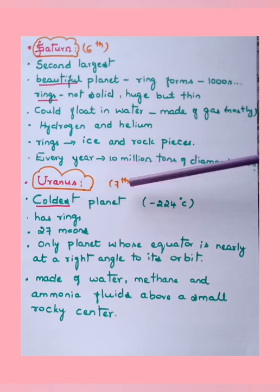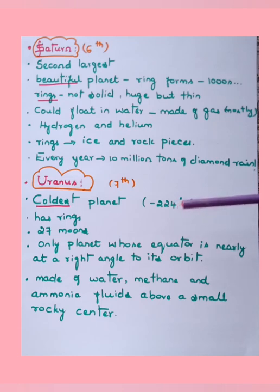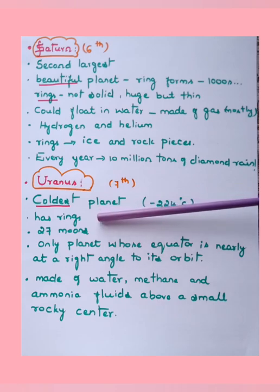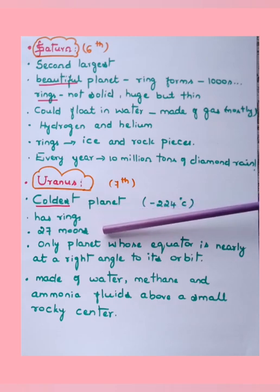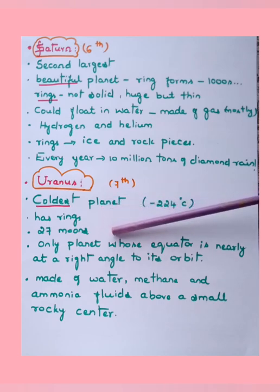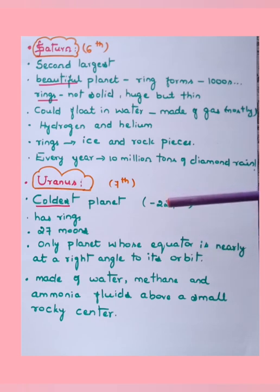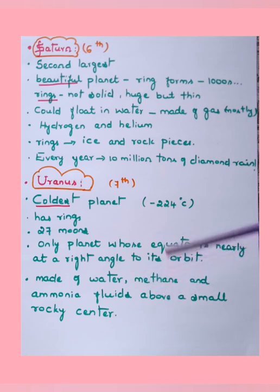Uranus is the seventh planet in the solar system. It is the coldest planet, with a temperature of about minus 224 degrees Celsius. It has rings and about 27 moons. Uranus is the only planet whose equator is nearly at a right angle to its orbit. It is made up of water, methane, and ammonia fluids above a small rocky center.